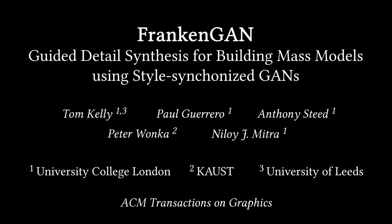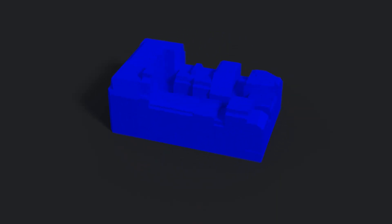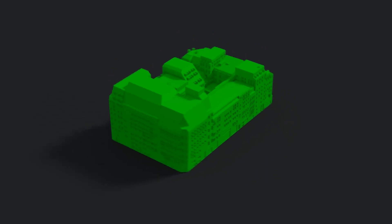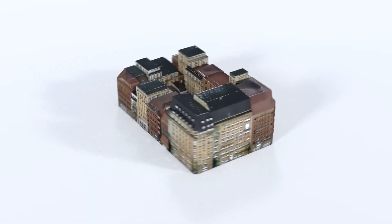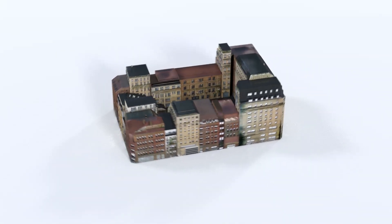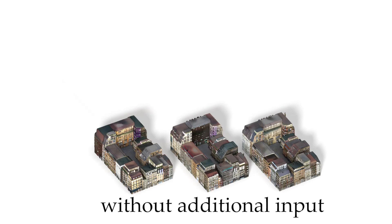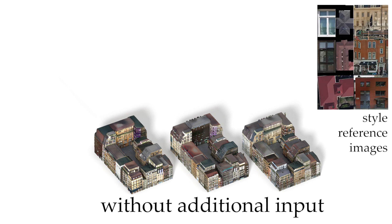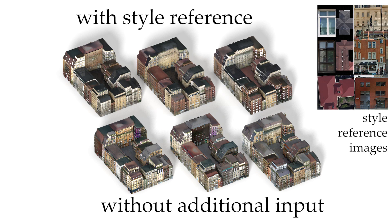We present FrankenGAN, a method to add detail to coarse building RAS models. Given a coarse building model, we generate geometric and texture detail. This detail can be generated fully automatically without user input, or with style provided by the user in the form of style reference images. Our method is based on a set of generative adversarial networks that learn a distribution of details from a large real-world dataset.